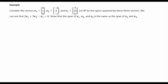So now we'll consider these three vectors. We want W to be the space spanned by these three vectors. And we can see that 2V1 plus 3V2 minus V3 is equal to zero. So we already know that they're not linearly independent. I want to show that the span of V1, V2, and V3 is the same as the span of V1 and V2.